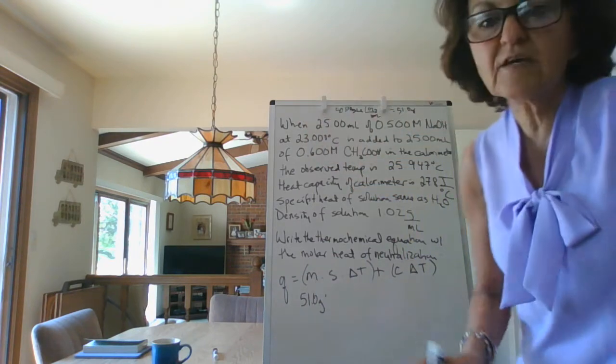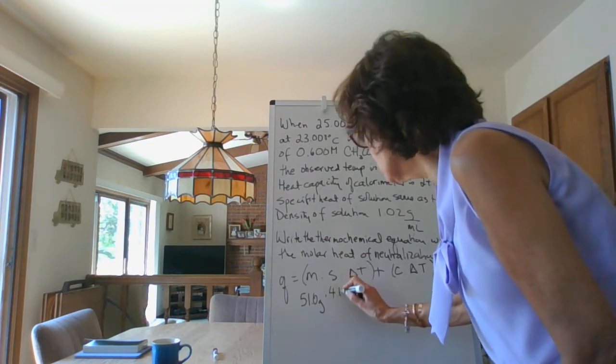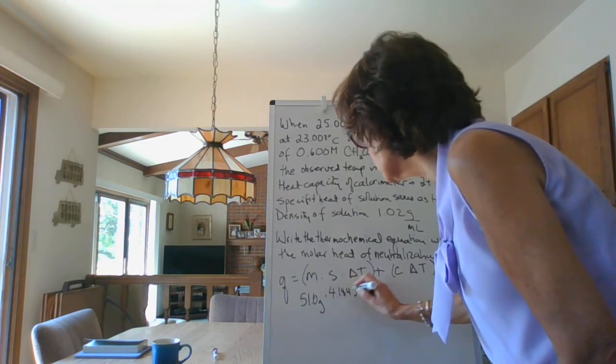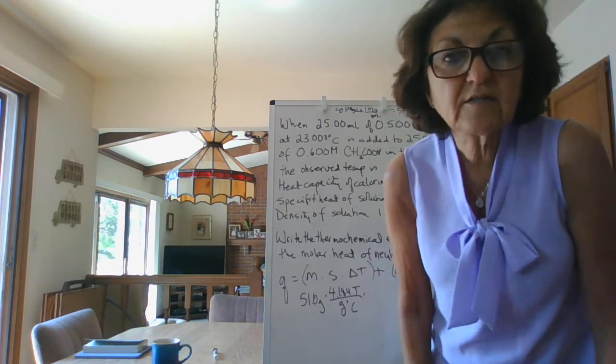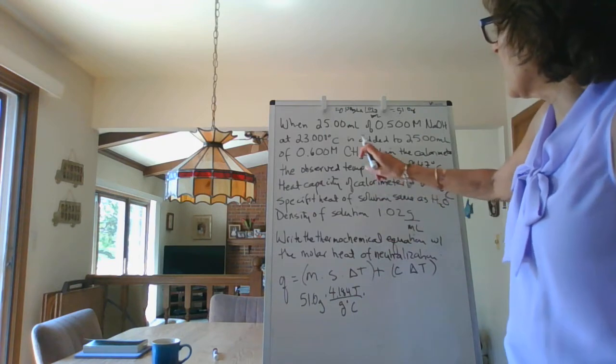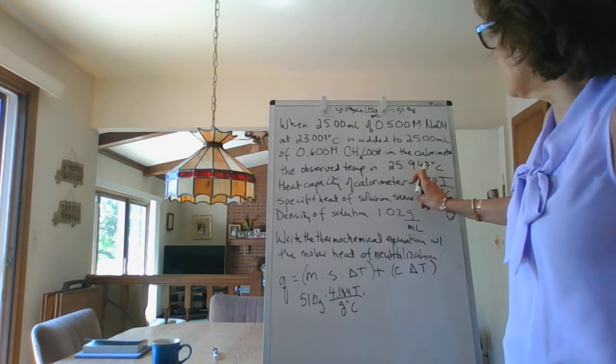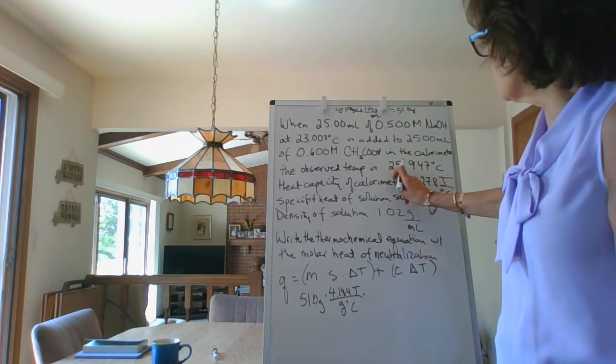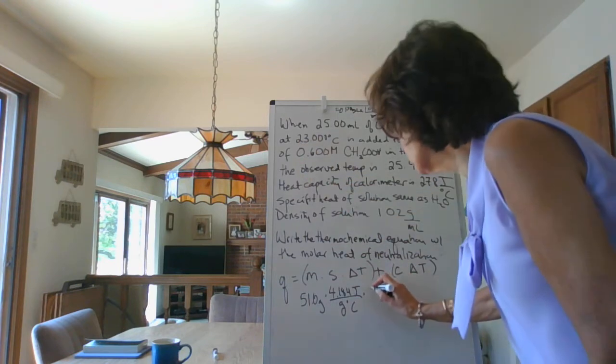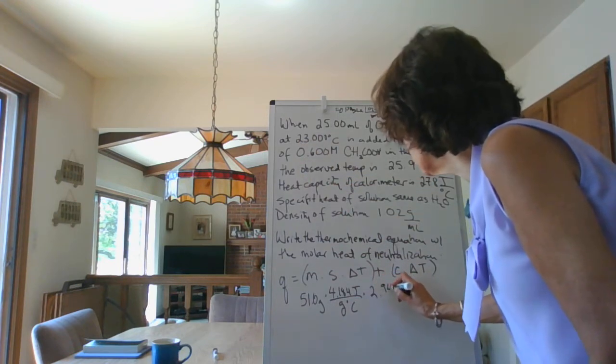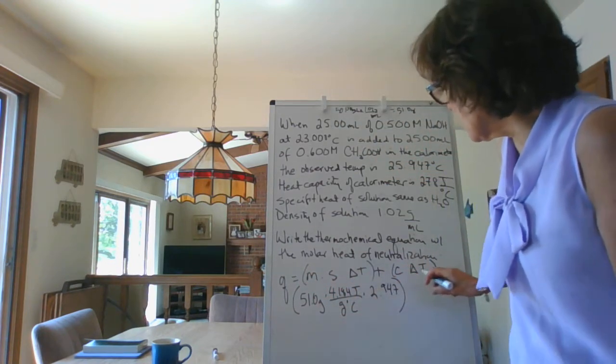The specific heat they told us to use the specific heat of water, which is 4.184 joules per gram degrees Celsius. What would the delta T be? We have initial temperature was 23, final temperature was 25.947, so delta T is 25.947 minus 23, which is 2.947.